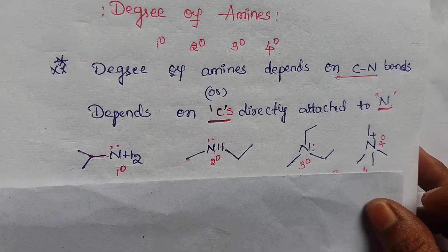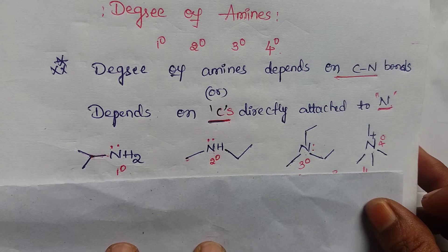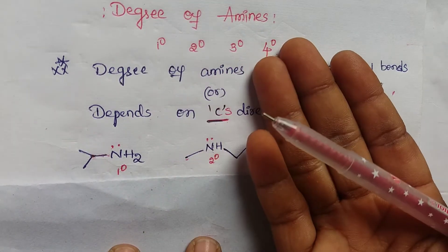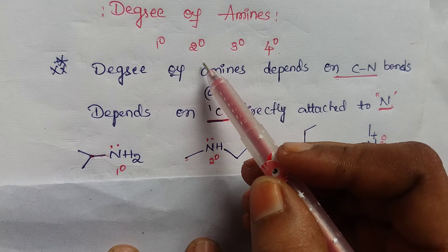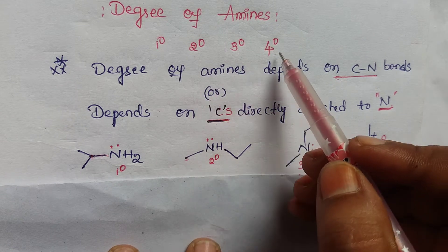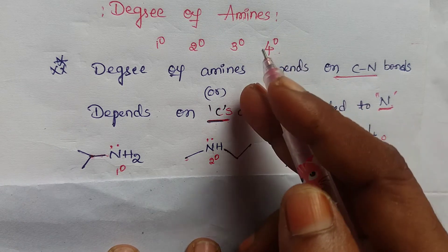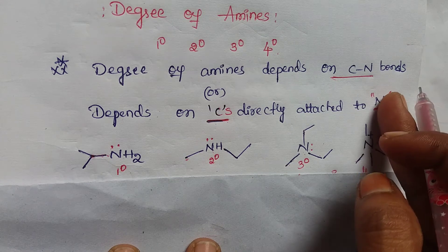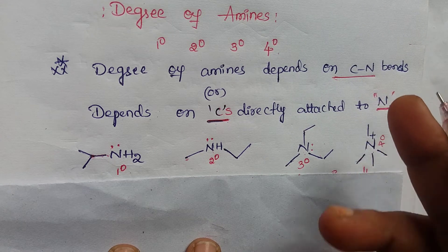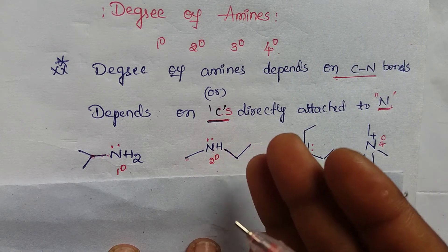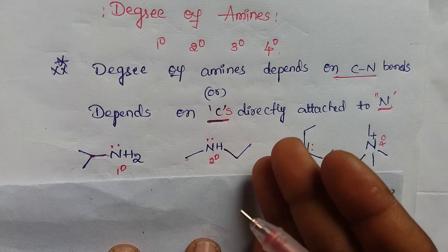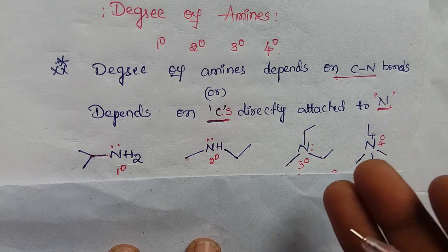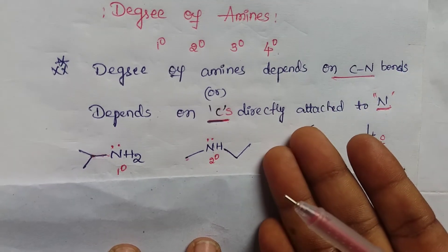Hello students, I am your chem madam. Today I will explain the topic: degrees of amines. These are primary, secondary, tertiary, and quaternary amines. The degree of amines depends on the number of C-N bonds, or the degree of amines depends on the number of carbons directly attached to the nitrogen. You may choose any one of these two concepts for the identification of degree of amines.